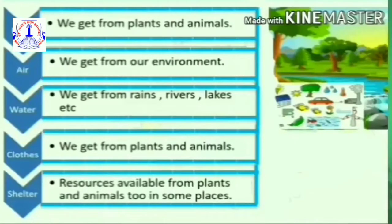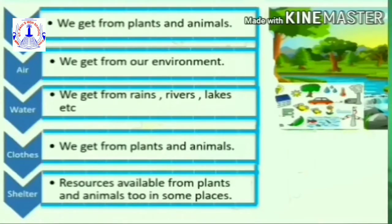We get clothes from plants and animals. Shelter resources are available from plants and animals too in some places. As all these needs are fulfilled by the resources available in our surroundings, that is our environment. As environment, plants, and animals are all parts of our life, we are totally dependent on them. Hence, the needs of all living things are met in their environment.